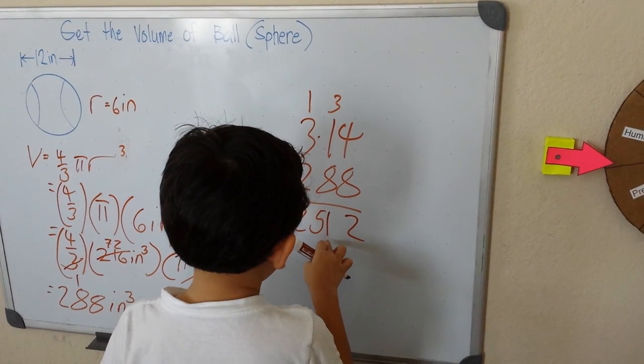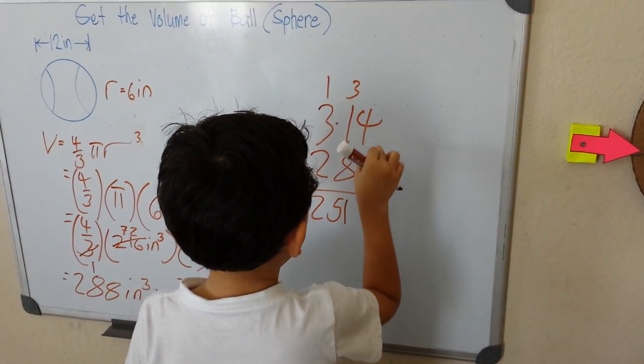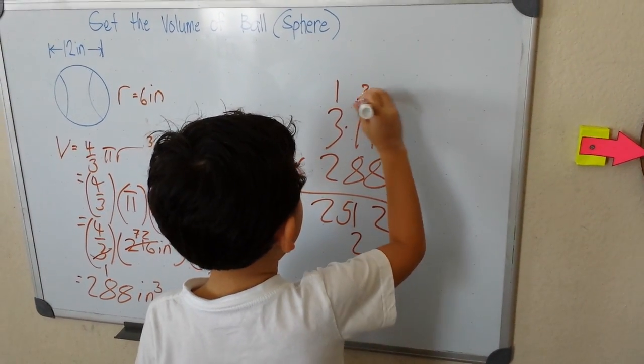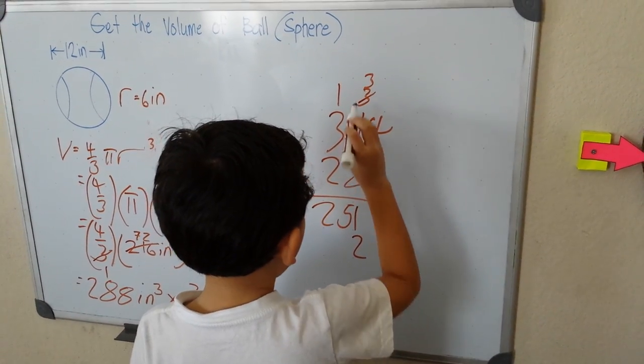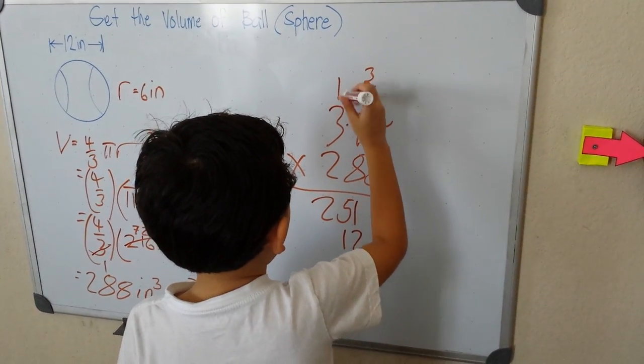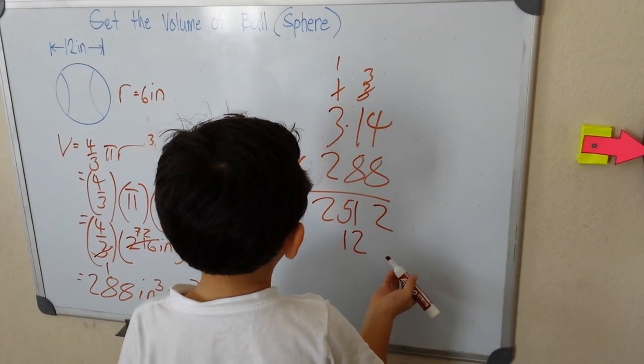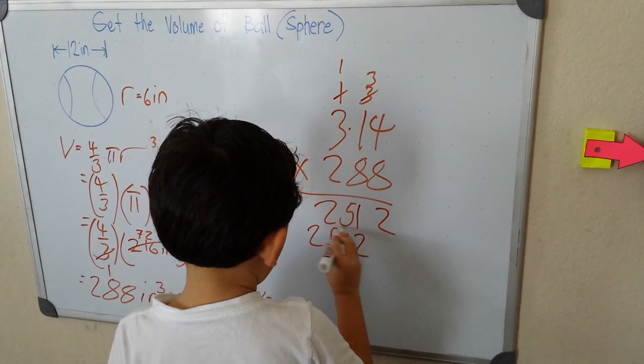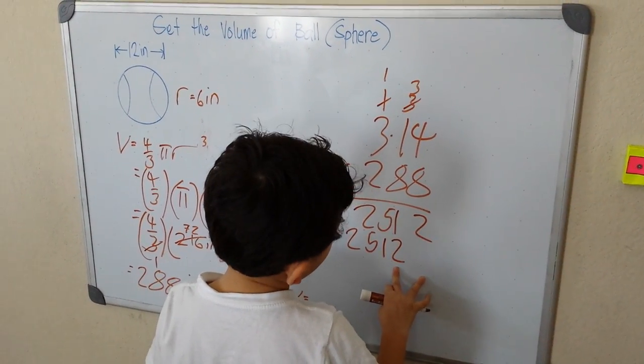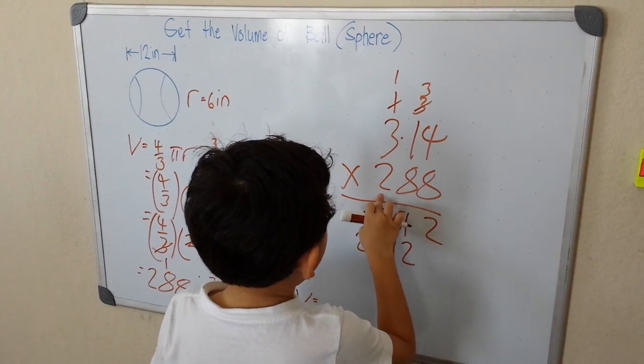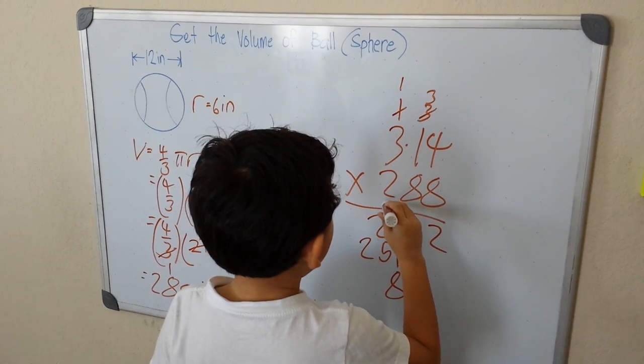We need to put it under the 1, so there's an invisible zero. So we got 8 times 4, same calculation. 8 times 1 is 8 plus 3 is 11, carry the 1. 8 times 3 is 24 plus 1, that's 24. Now we move to 2, which is invisible. So 2 times 4 is 8, then 2 times 1 is 2, 2 times 3 is 6.